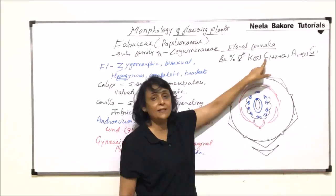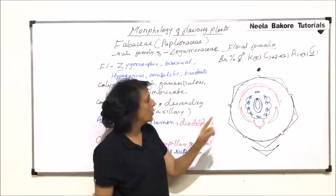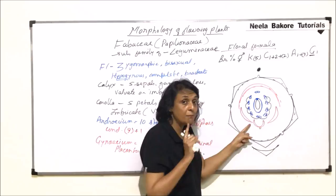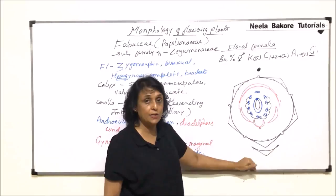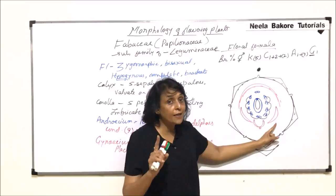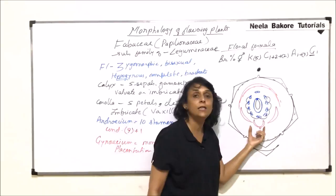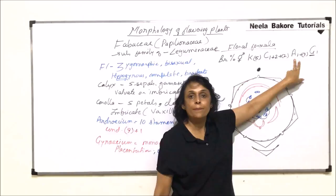Sepals, five and fused. Petals, now we have written the number as 1+2+2. That means we are talking of this one, then these two and these two. That means we are going from posterior side towards the anterior side. So this is one which is single. Two, these are the two. They are free, not fused. And these anterior two are fused. So we have put these two in a bracket.